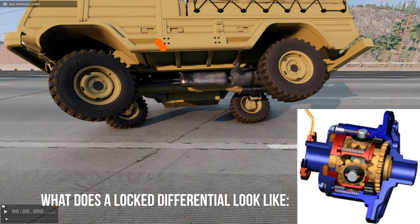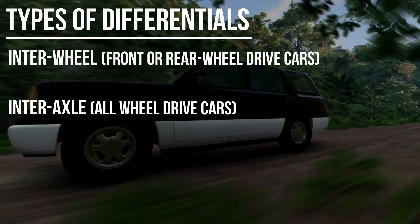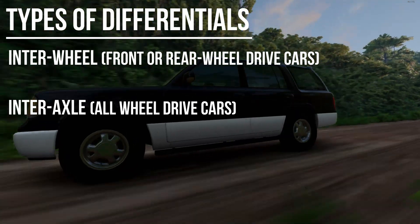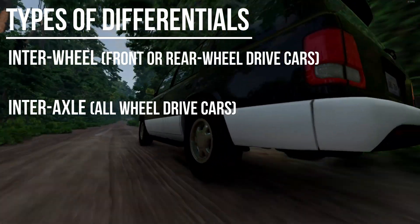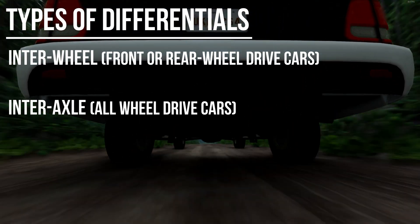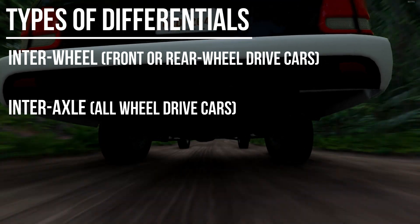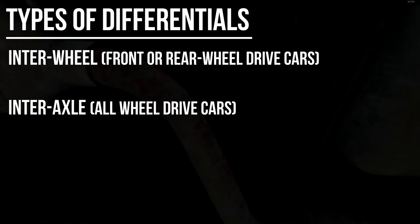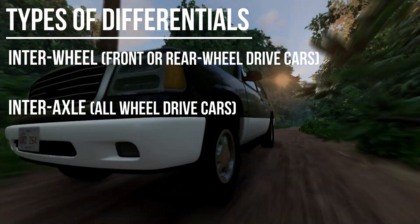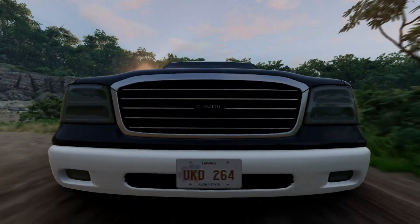I hope I explained everything successfully and now you understand the structure of the differential, so let's move on to the types of differentials. There are two types: interwheel and inter-axle. The first is located in the housing of the rear axle on vehicles with rear wheel drive, or in the gearbox housing on front wheel drive cars. The second is between the axles of all wheel drive cars. There are also many varieties of differential structure, but this is a rather large topic. If you would like me to make a video on different types of differential structures, write in the comments and I will definitely make it.